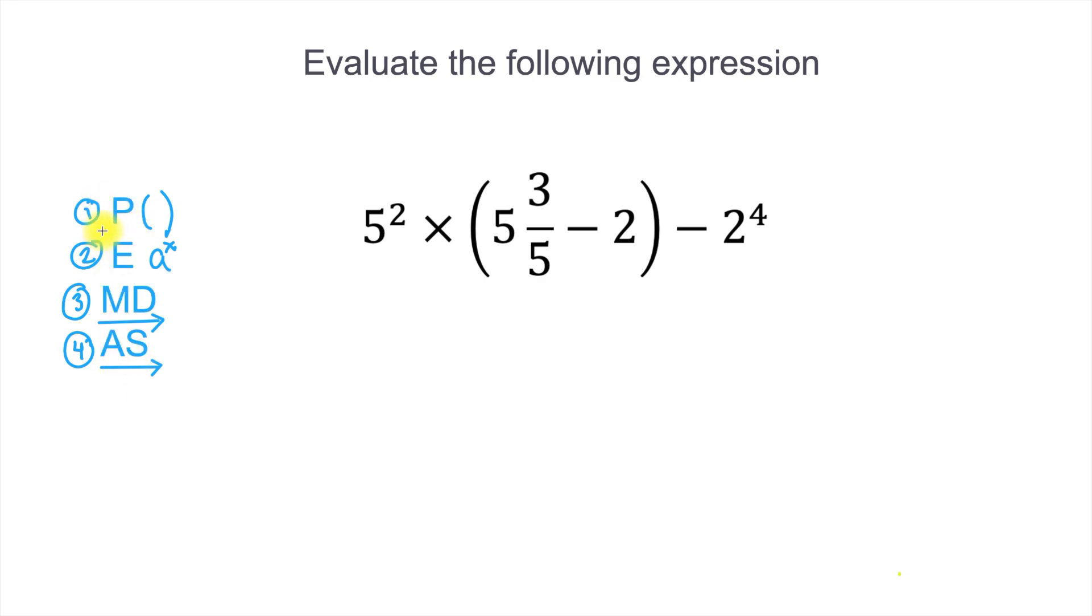So the first thing we need to do is evaluate any parentheses we see. And we have a set of parentheses right here. And inside those parentheses, we have 5 and 3 fifths minus 2. Now what I like to do is just bring down our answer. So let's set up a little work area on the side over here. So PEMDAS is over here, so I'm going to write a number 1. And I'm going to show the work for PEMDAS. So we'll have the work for 5 and 3 fifths minus 2.